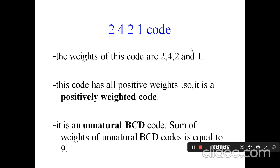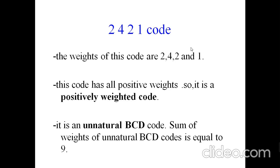Welcome back to DLF online class. This is a continuation of the previous video on binary codes. This is the second category: the 2421 code, which is a weighted code. The weights are represented as 2-4-2-1, whereas in 8421 code the weights are 8-4-2-1. These are different weights, but this is also a positively weighted code, similar to 8421 which is also a positively weighted code.